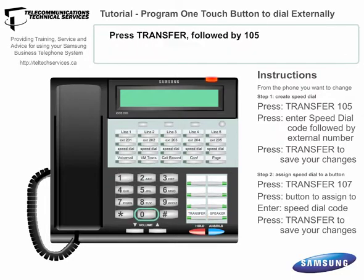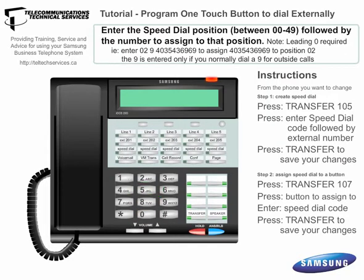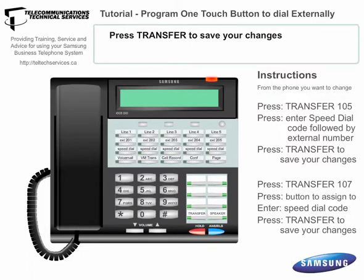Press Transfer 105. Enter the speed dial position you want this number to be assigned to — this is a number between 00 through 49. For example, to enter a number in speed dial position 02, you would enter 02 9 403 543 6959. The 9 is added to access an outside line before dialing the external number. If you don't normally do that to make a call, leave it out. Press Transfer again to save your changes.